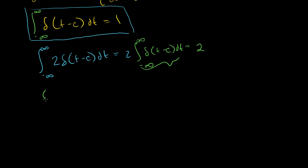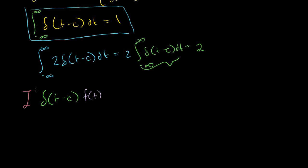So let's say I have my Dirac delta function and I'm going to shift it — that's a little bit more interesting. If you want to unshift it, you just set c equals 0. And I'm going to shift it and multiply it times some arbitrary function f of t. If I wanted to figure out the Laplace transform of just the delta function by itself, I could set f of t equal to 1. So let's take our Laplace transform of this.